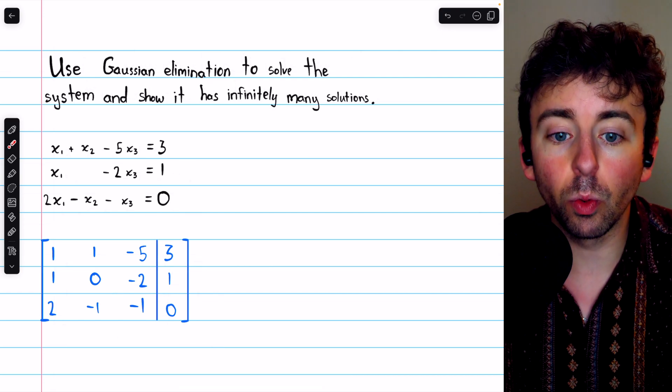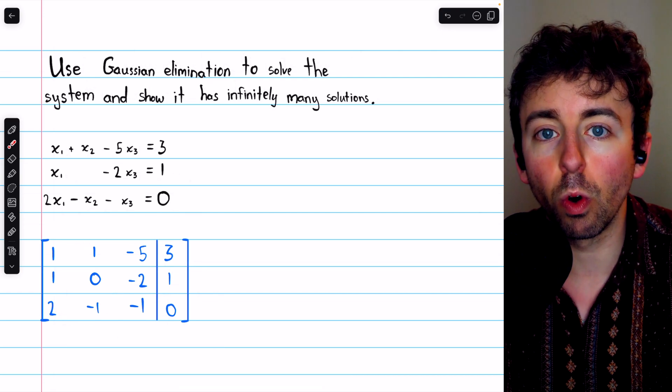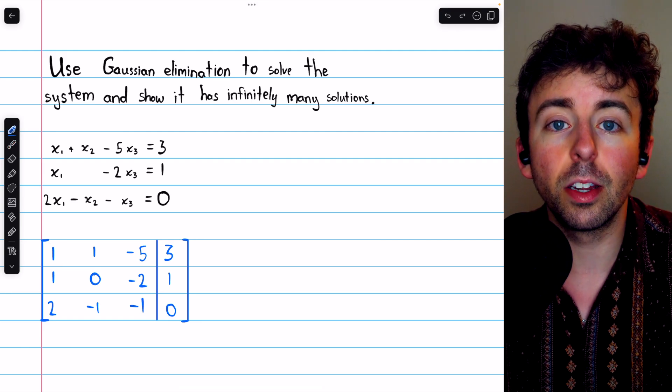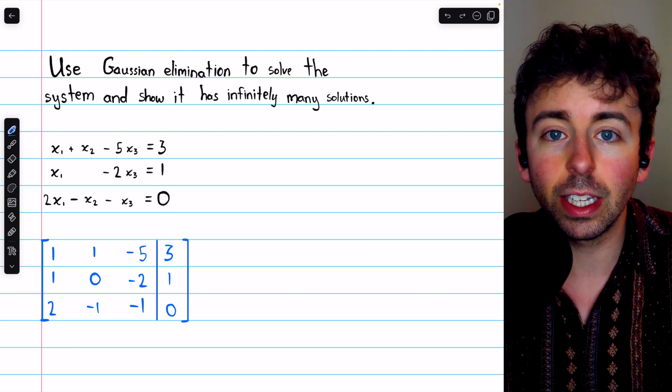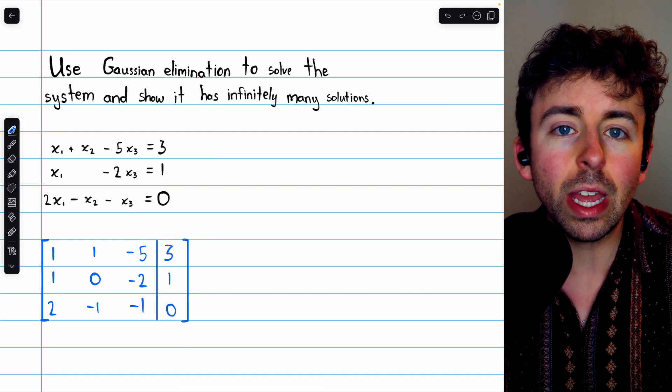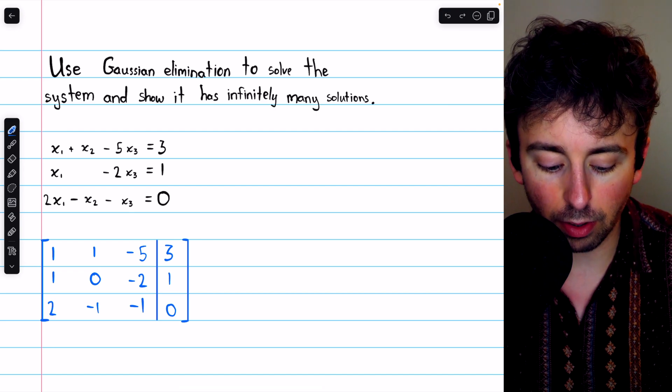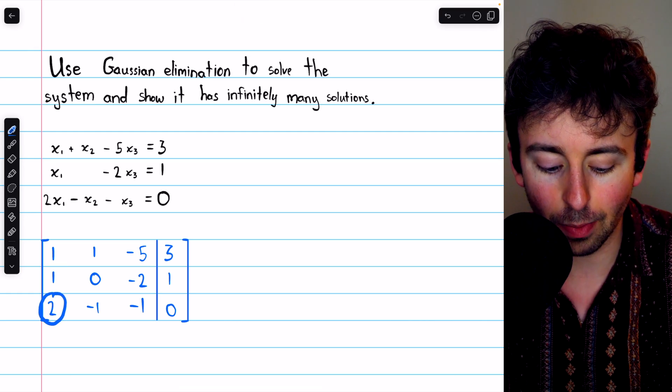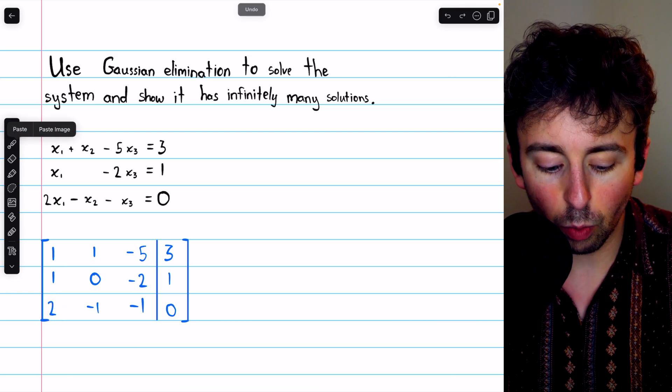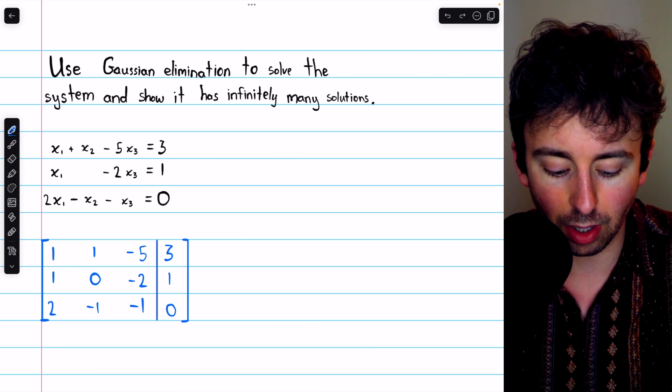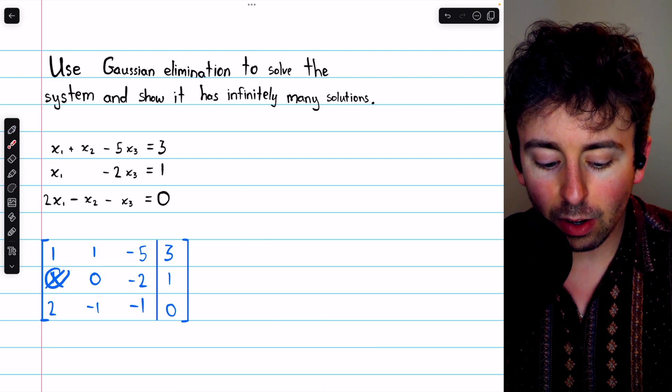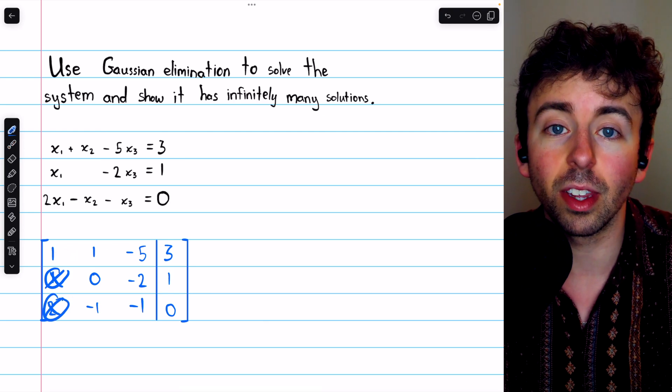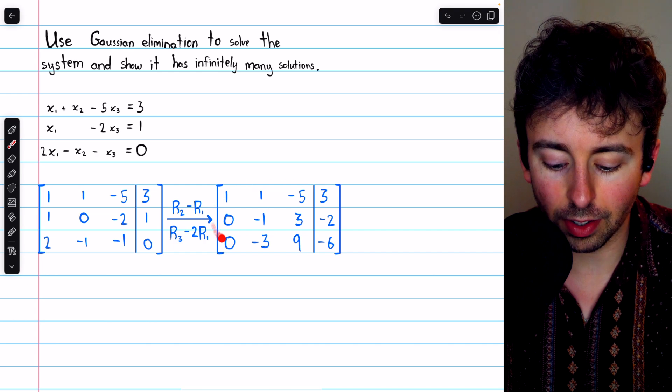By performing Gaussian elimination, we'll get this matrix into row echelon form. Now the first entry in row one we want to be positive one, and thankfully it already is. So next we have to introduce zeros below this leading one. We need this to be a zero and this to be a zero. To that end, we'll subtract row one from row two so that this one becomes a zero, and we'll subtract two times row one from row three so that this two becomes a zero as well. And we see the result here.